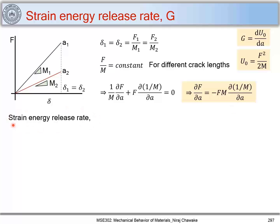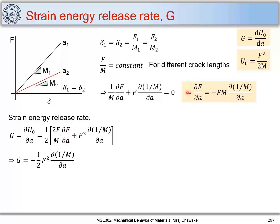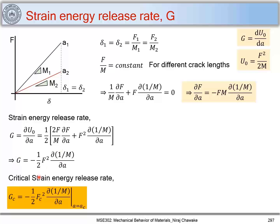Our aim is to find the strain energy release rate G, also called crack extension force. G = dU₀/dA with U₀ = F²/(2M). Performing partial differentiation and substituting ∂F/∂A, we get G = −(F²/2M²)·∂(1/M)/∂A. For the critical strain energy release rate, we replace F with F_C (critical force) and A with A_C (critical crack length), giving G_C = −(1/2)·F_C²·∂(1/M)/∂A.